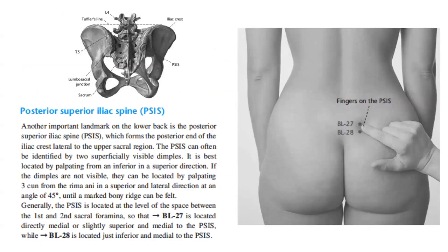Posterior superior iliac spine — PSIS. Another important landmark on the lower back is the posterior superior iliac spine, which forms the posterior end of the iliac crest lateral to the upper sacral region. The PSIS can often be identified by two superficially visible dimples. It is best located by palpating from an inferior in a superior direction. If the dimples are not visible, they can be located by palpating three tsun from the rima anii in a superior and lateral direction at an angle of 45 degrees until a marked bony ridge can be felt. Generally, the PSIS is located at the level of the space between the first and second sacral foramina, so that bladder 27 is located directly medial or slightly superior and medial to the PSIS, while bladder 28 is located just inferior and medial to the PSIS.